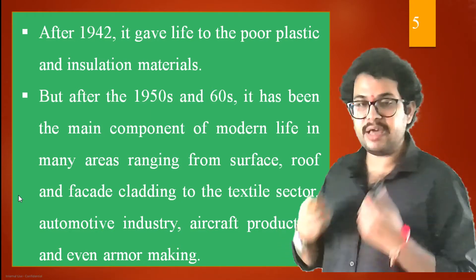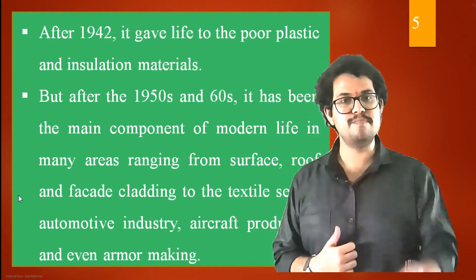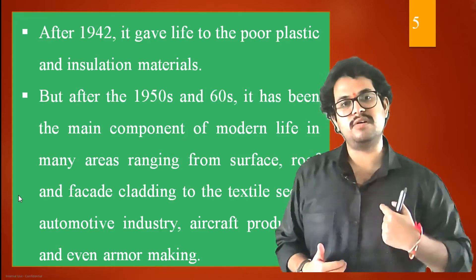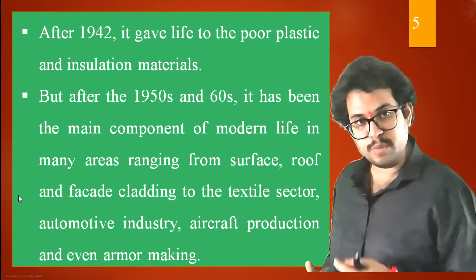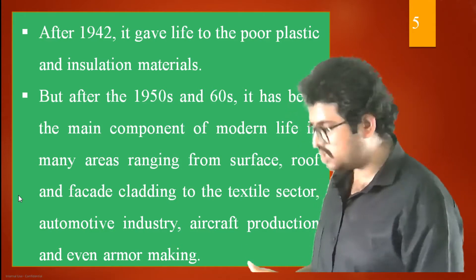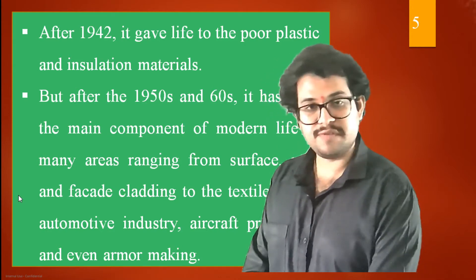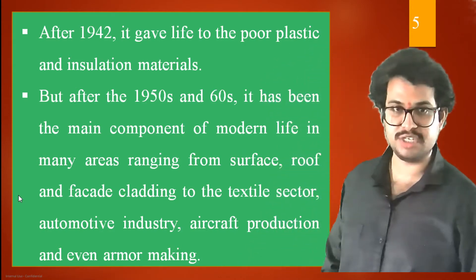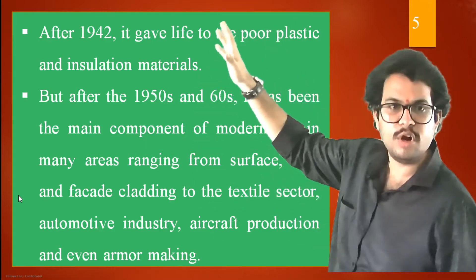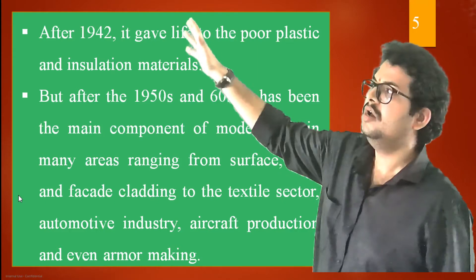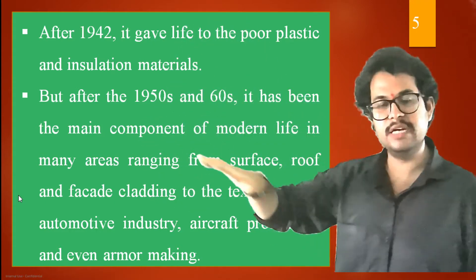Whenever we want to prepare an armor, it should have less weight but withstand a lot of impact and not get pierced. Armor making is also making use of S2 type fiberglass for its production. Cladding is nothing but the painting or surface finishing we do for walls under construction — that is called cladding: facade cladding, surface cladding, or roof cladding.